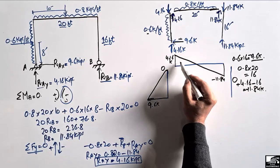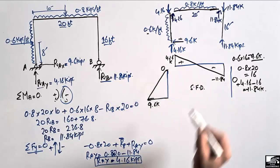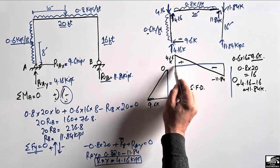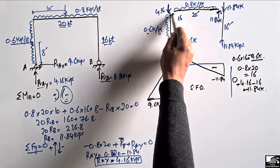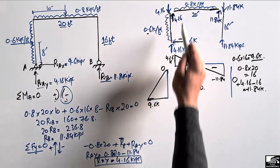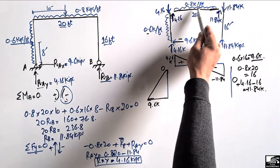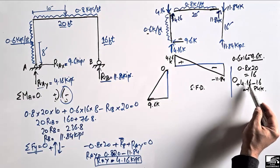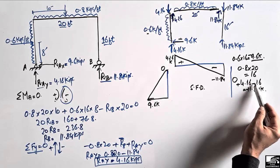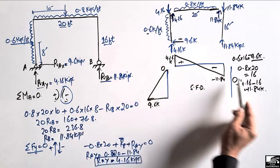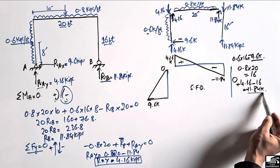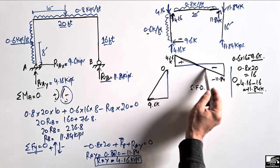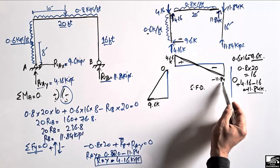The beam shear starts at positive 4.16 (upward reaction), and due to the downward distributed load of 0.8 kip per foot, it decreases linearly. Subtracting 16 kips total distributed load from 4.16 gives minus 11.84. So the shear diagram moves from plus 4.16 at the left end down to minus 11.84 at the right end.